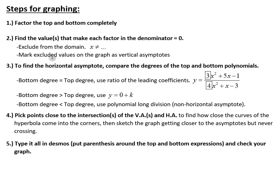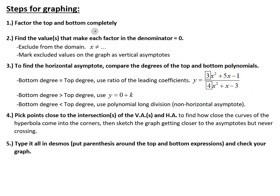Here are the steps for graphing by hand. Step one: factor the top and bottom polynomials as completely as possible. Step two: find the value or values that make each factor in the denominator equal zero. Exclude those values from the domain — we can't have 0 in the denominator, so any value of x that makes the denominator 0 must be excluded. Mark excluded values on the graph as vertical asymptotes.